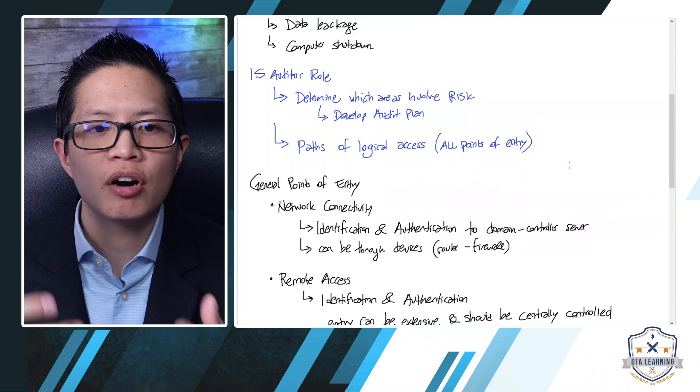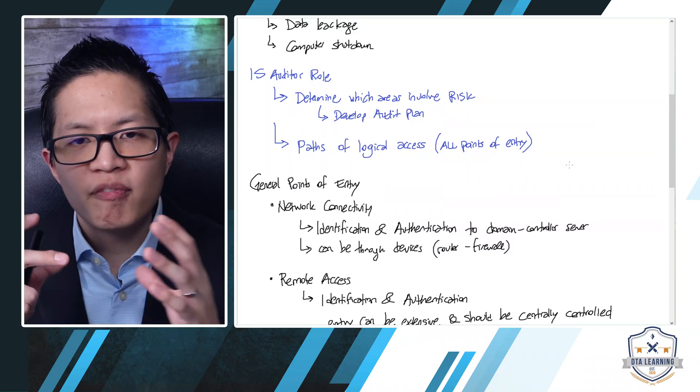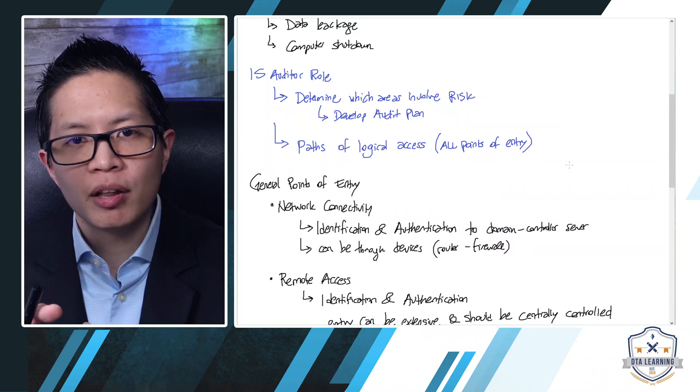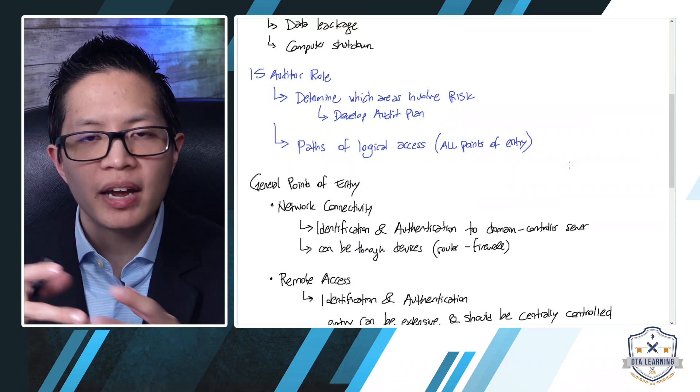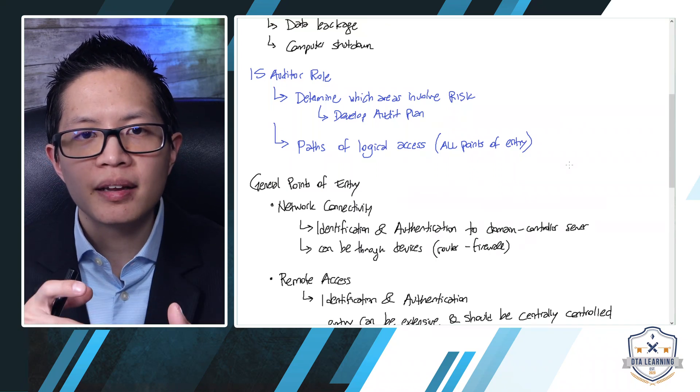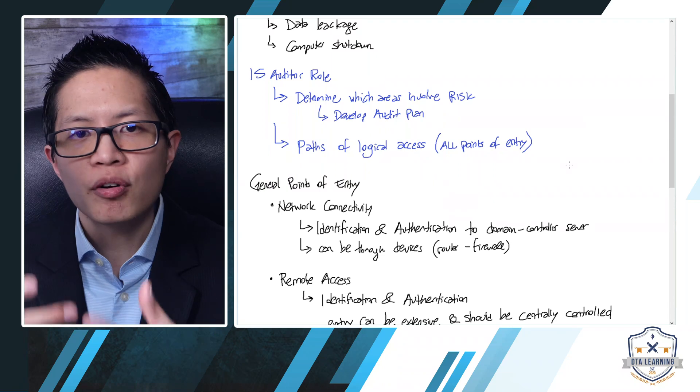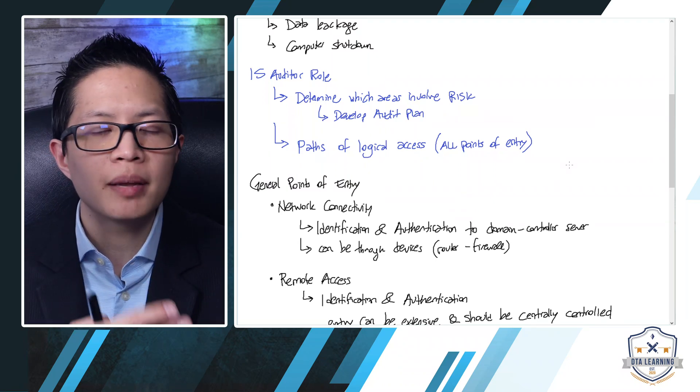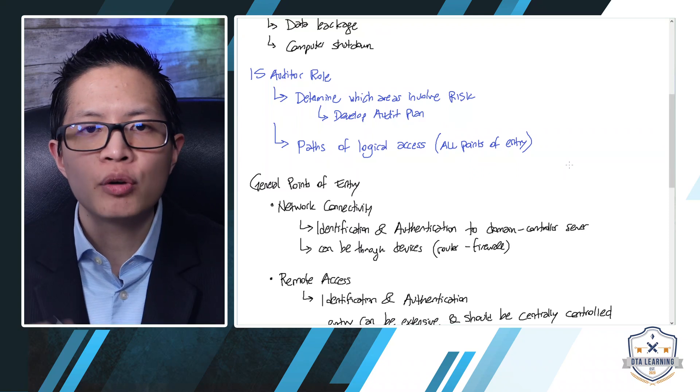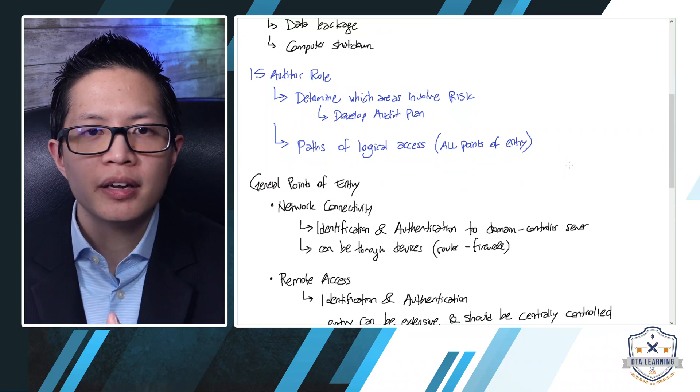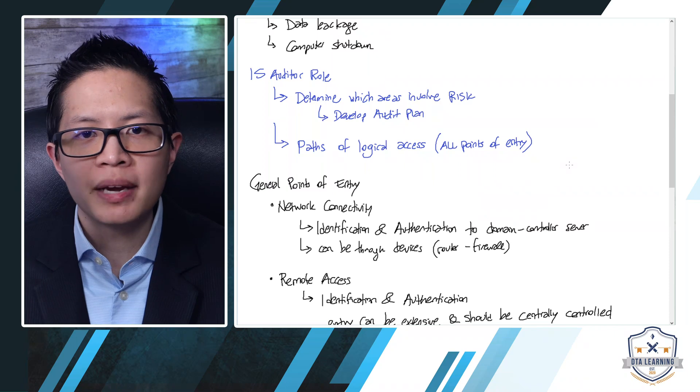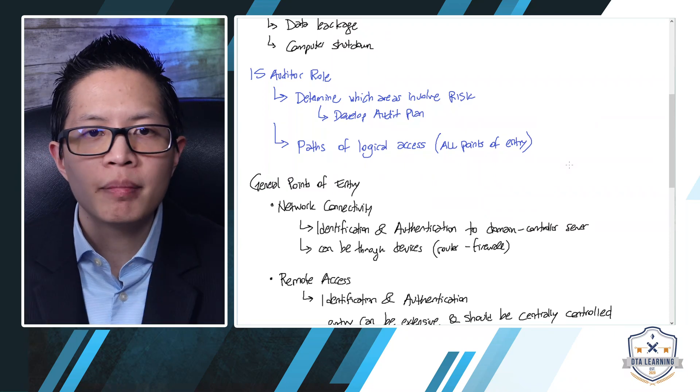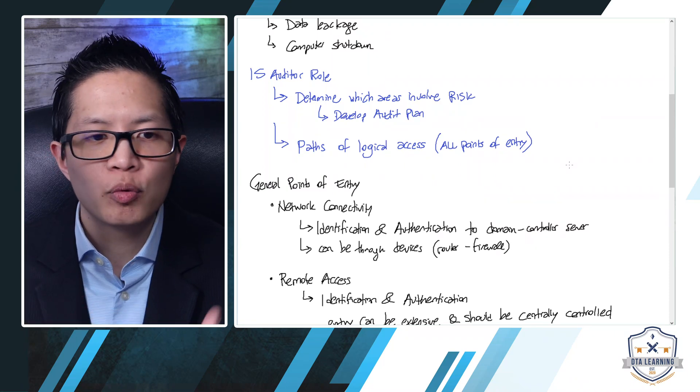You can also help management to identify all the paths to that logical access, basically all points of entry. And that's very important because if management is not capable of identifying all points of entry, it could be that they are missing a higher risk because now they are missing a point of entry that could potentially be exploited. That's why the IS auditor could also help management to make sure that all points of entry are being identified and all of them are being addressed in some way or another.